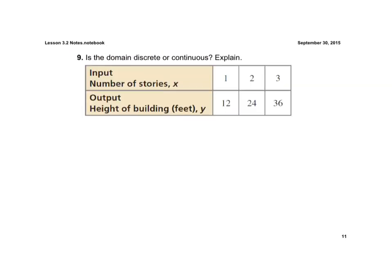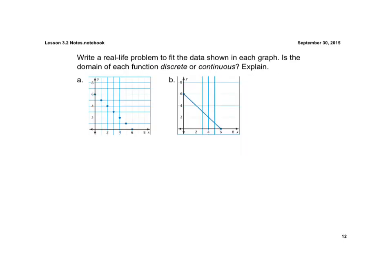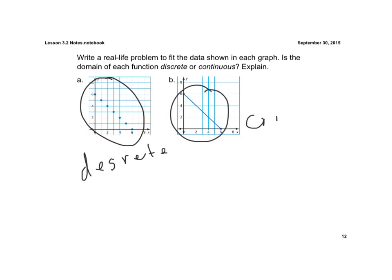Here we take a look at a table of values and it asks us: is this domain discrete or continuous? If X represents the number of stories in a building, can you have part of a story? No. So this would be a discrete domain because we can only have whole number values. This would be a discrete domain, and the other would be a continuous domain.